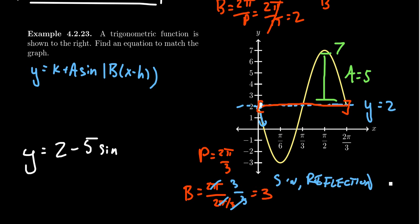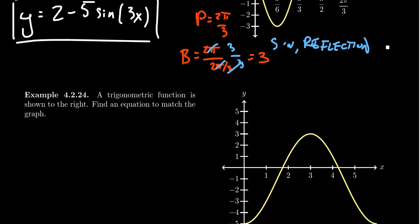And so then finishing up our equation here, we get y equals 2 minus 5 sine of 3x. And this then gives us the correct equation for this sine wave. Again, there's more than one equation you could use, but this is going to be the simplest one. We want to avoid horizontal shifts as much as possible.